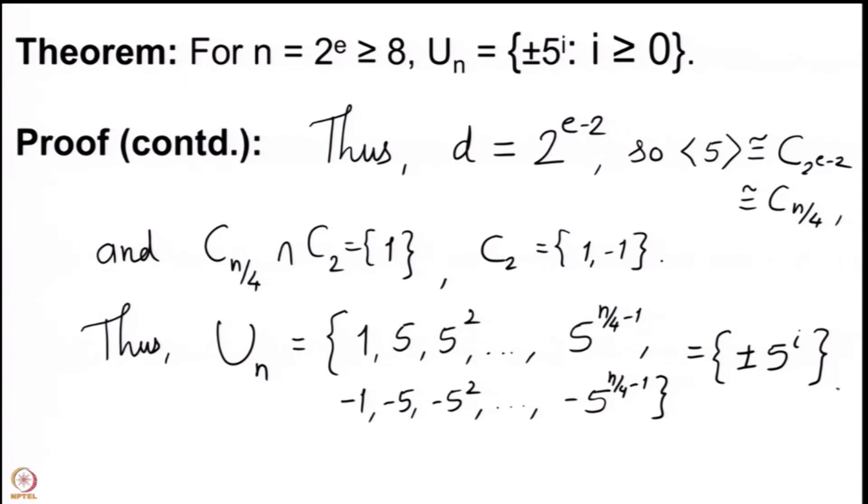We have now determined the structure of U(n) when n is a prime power. If the prime is an odd prime, U(n) is a cyclic group. If the prime is 2, then U(2) is trivial, U(4) is cyclic of order 2, and for U(2^e) with e ≥ 3 we get C₂ × C(n/4). This tells us everything about U(p^e).